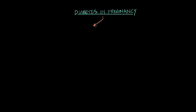Diabetes and pregnancy split up into two different categories. There's the category of women who had diabetes before becoming pregnant, and that's called pre-gestational diabetes — pre for before, gestational for pregnancy, so before-pregnancy diabetes. And then there are the women who become diabetic during their pregnancy, which is called gestational diabetes.